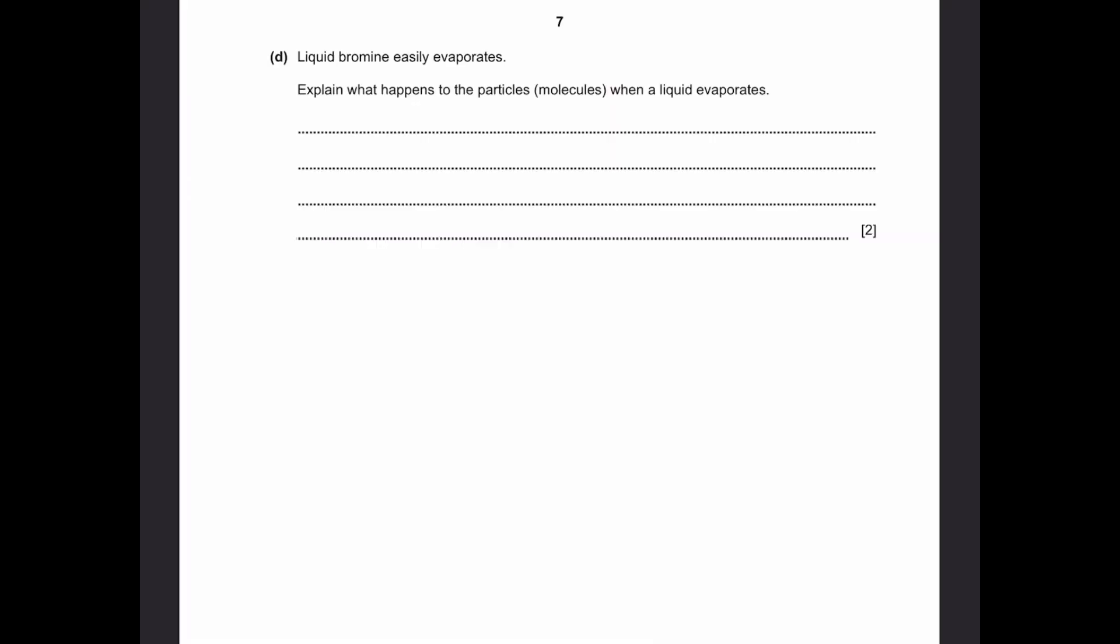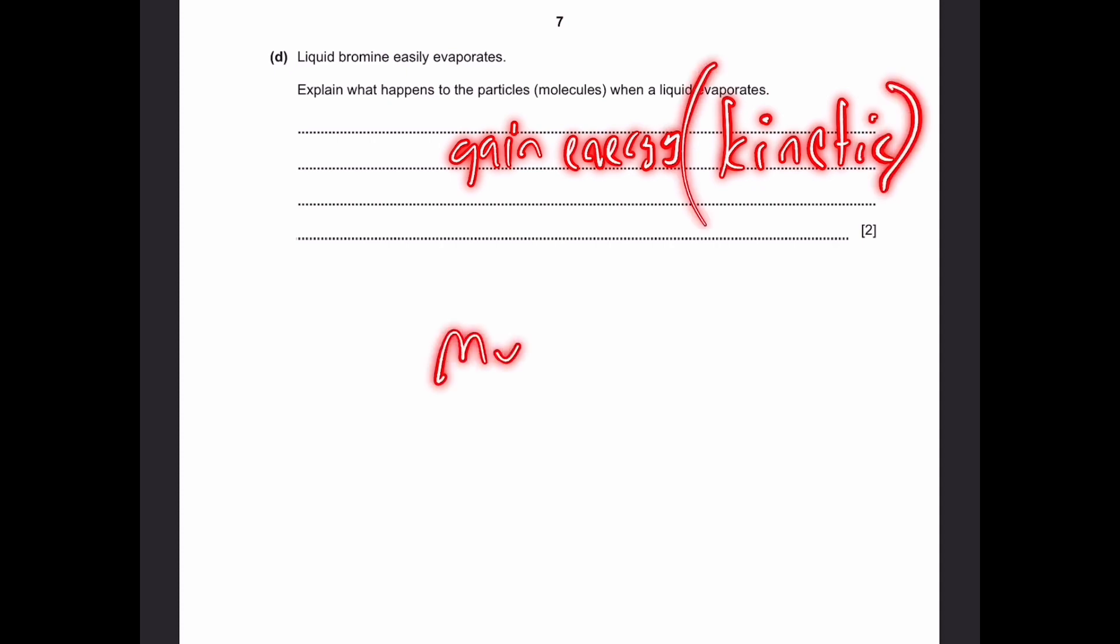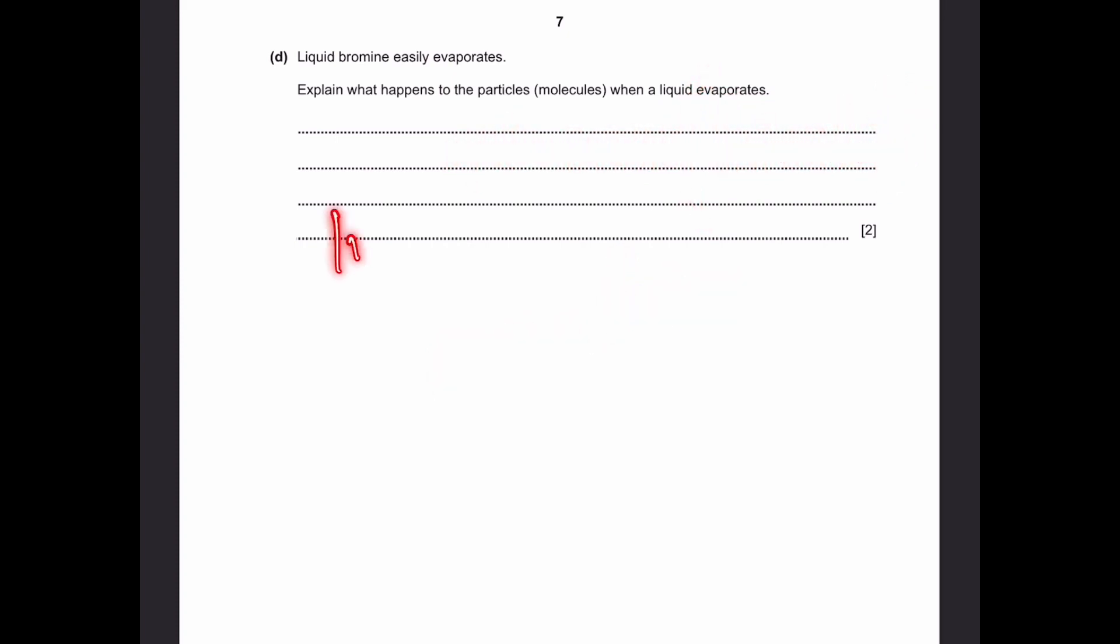D. Liquid bromine easily evaporates. Explain what happens to the particles or the molecules when a liquid evaporates. So what happens when a liquid changes into a gas? It evaporates. What happens during evaporation? It's like the particles gain more energy. They gain energy. And what kind of energy? Kinetic energy. Because they move faster.